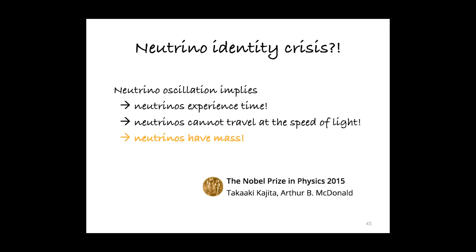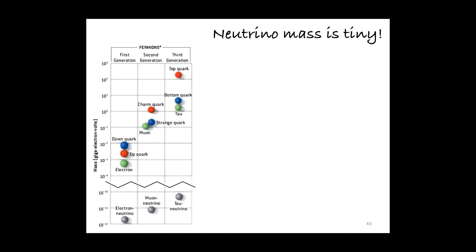So because they experience time, they cannot travel at the speed of light. They must travel at speeds less than the speed of light, which means they must have non-zero mass — because the only things that travel at the speed of light are massless particles. So neutrinos have mass. For the longest time we thought that they didn't, and this was a groundbreaking discovery. But it raises a lot of questions, because we know from other measurements that their mass is tiny compared to all the other particles we know.